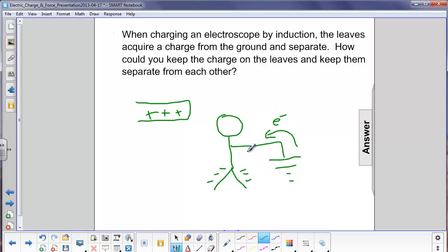The question is, how do you keep the charge on the leaves and keep them separate from each other? What you have to do is remove the ground wire first, because if you take this charge right away, the electrons, there will be too many here on the electroscope, they'll go right back to ground.